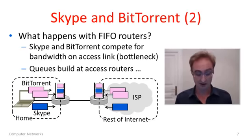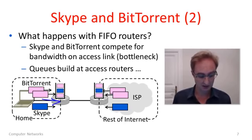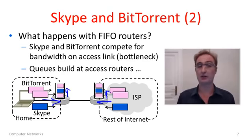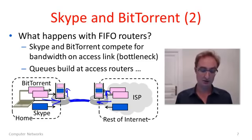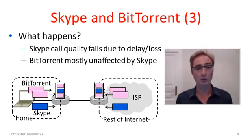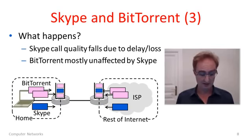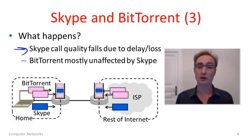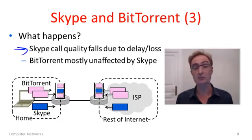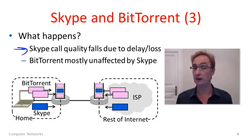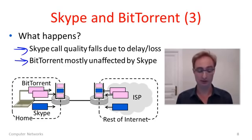With FIFO routers, both applications send packets that queue up on the bottleneck link. As the queue builds up from the competing traffic, we see increased packet delay and some packet loss. This means Skype is out of luck — call quality falls because of the interference caused by BitTorrent. If you've ever tried running a Skype call while running BitTorrent, you know it can be pretty bad. BitTorrent, on the other hand, is mostly unaffected because Skype wasn't using much bandwidth.